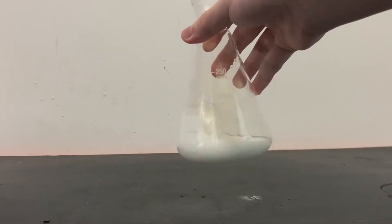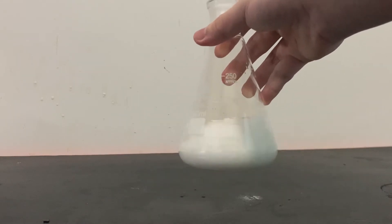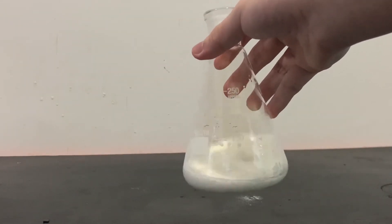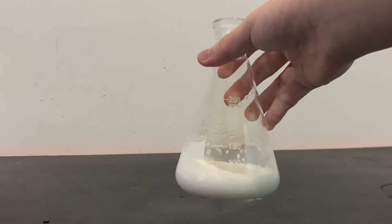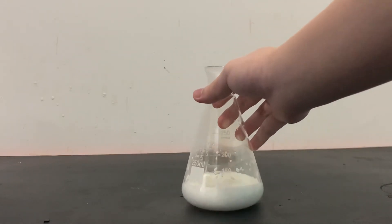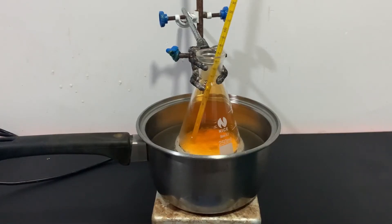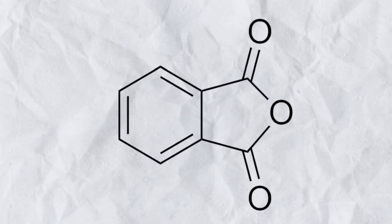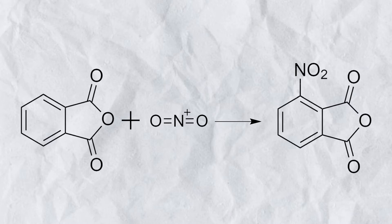After all the nitric acid is added, I swirl the flask just to make sure everything is mixed. I will then heat the flask in a boiling water bath for two hours. The phthalic anhydride reacts with the nitronium ion, which nitrates the third position of the aromatic ring.